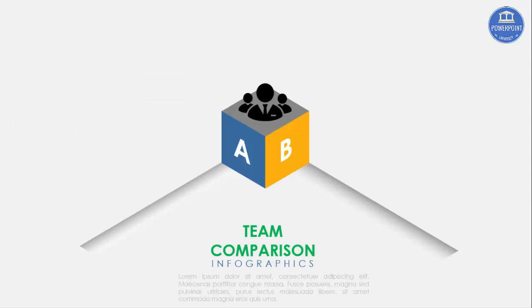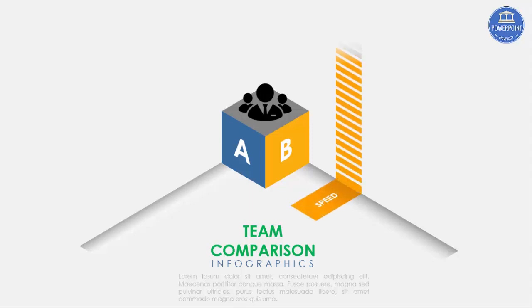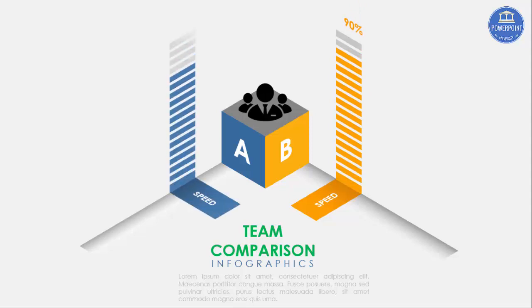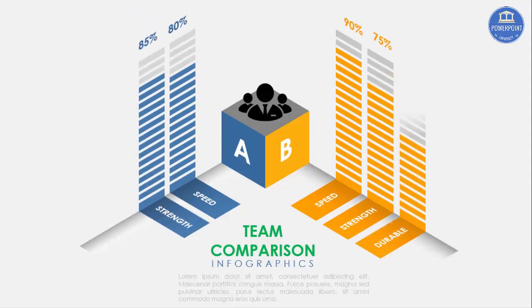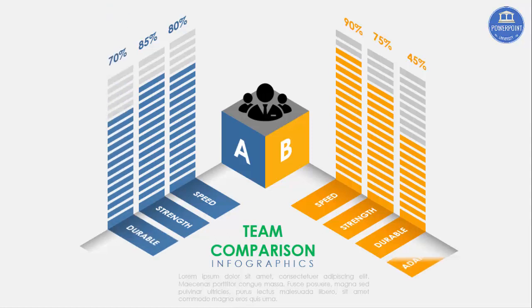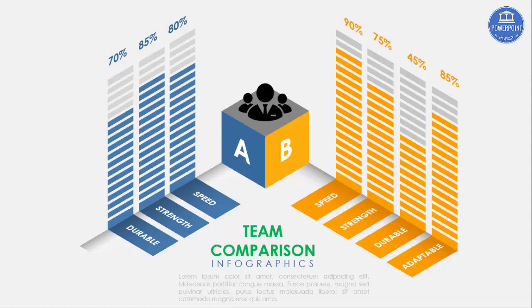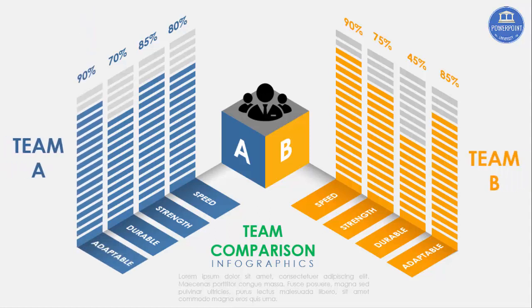Using a different infographic, here you can see I've put team A and B. When I click, it will show speed which is 90% for team B and 80% for team A, strength is 75% for team B and 85% for team A, durability is 45% and 70%, and adaptability is 85% and 90%. It's easy to compare the data in this style. Let's see how we can create this comparison slide in PowerPoint.